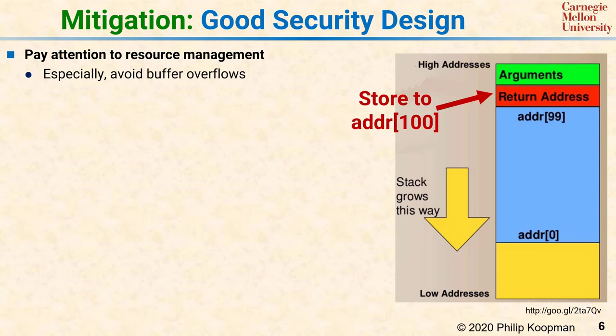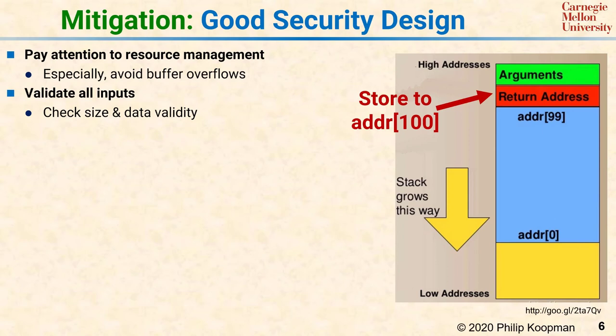Or, to be more clever, the attacker can modify the values in the array to actually be executable code, then point the return address to jump back into the array and run whatever program the attacker wants. Alternatively, the attacker can read more elements than allocated and retrieve sensitive information from memory — which might include security keys. Stopping these attacks requires that all inputs stored in arrays or variable-length data structures be checked for length, and that all inputs are checked for proper size and validity.